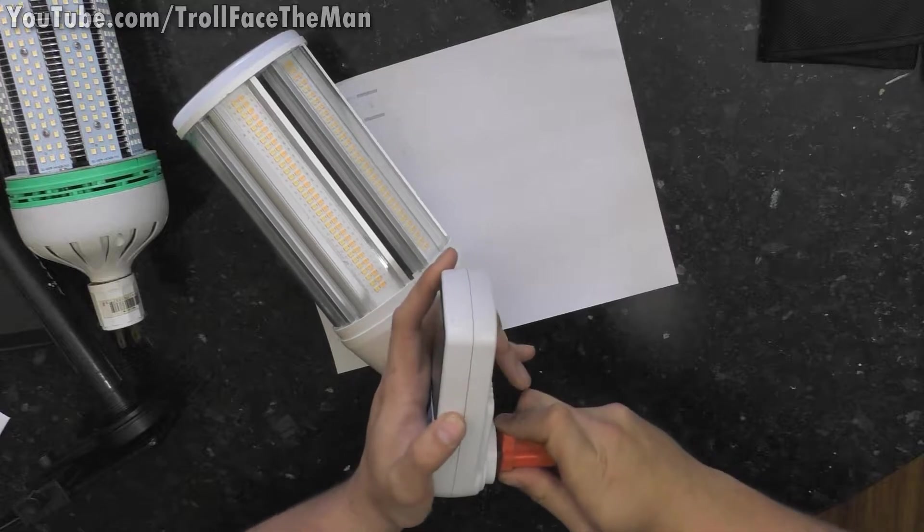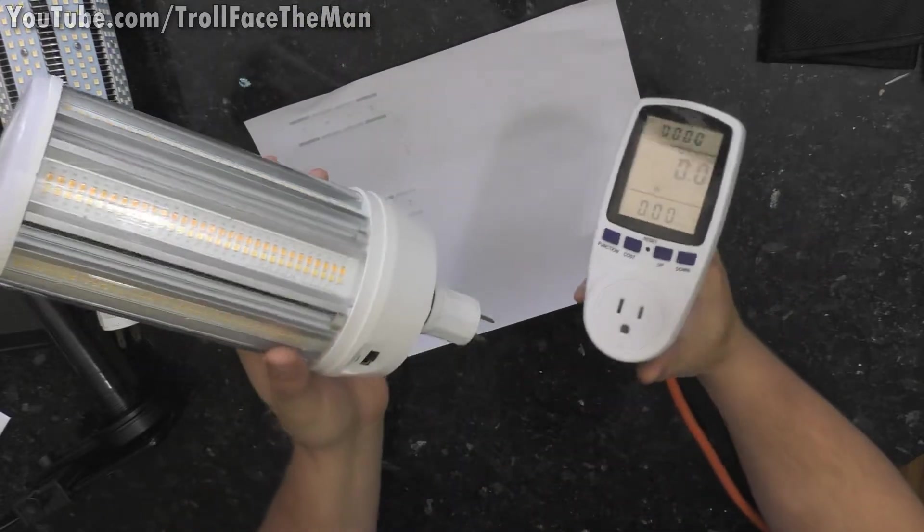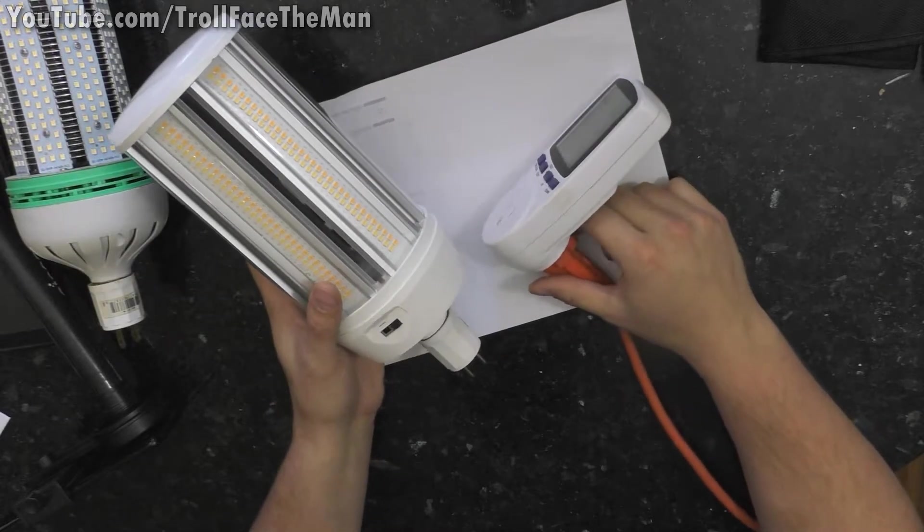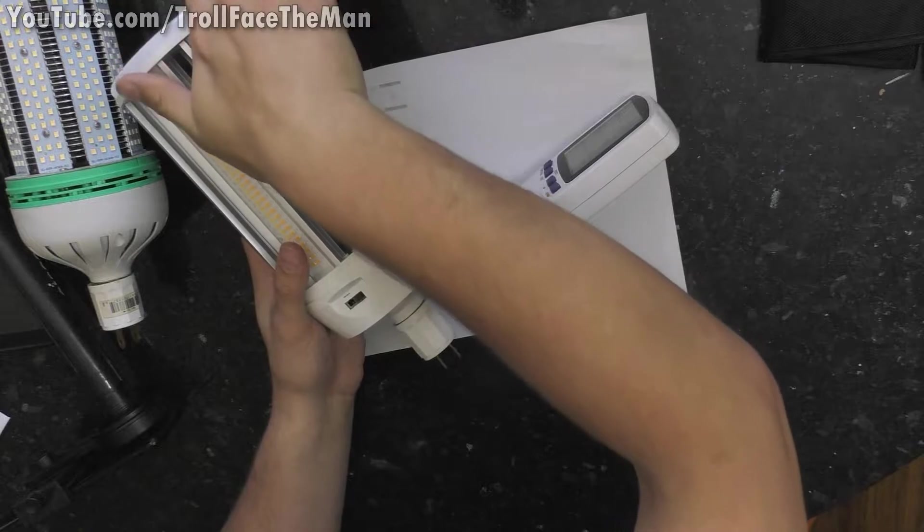First thing I want to kind of do is see what wattage this has at the different color temperatures. I'm going to plug in this watt meter and then I'm going to plug in this light. Right now it is set to daylight.